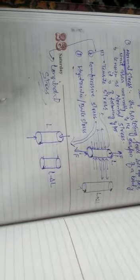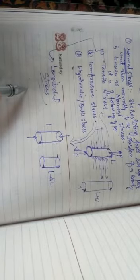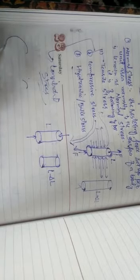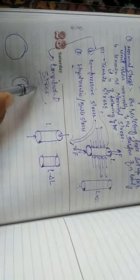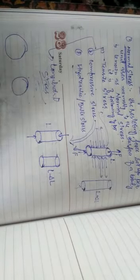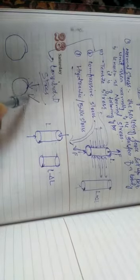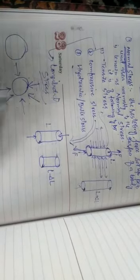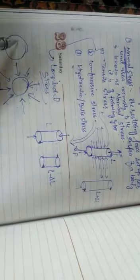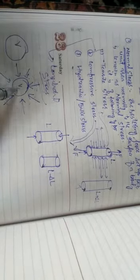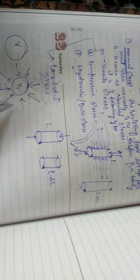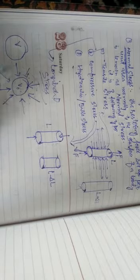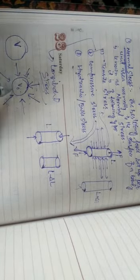Then there is another type of normal stress called hydraulic or bulk stress. If we have some object and this object is immersed in water, the water exerts pressure on every side of the object, normal to the surface. When an object is immersed in a fluid or gas, the fluid exerts force on the surface of the object. As a result the volume of the object decreases — it was originally having volume V and now it has volume V-naught.